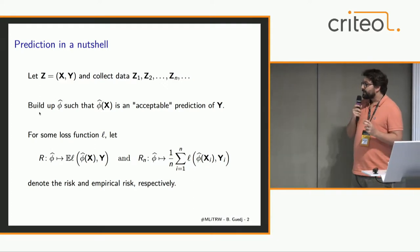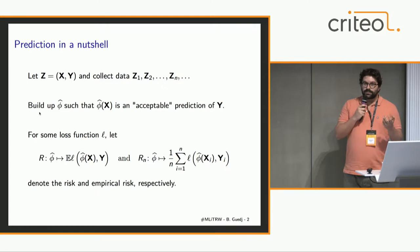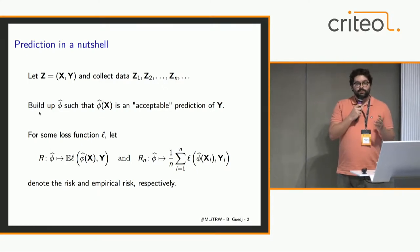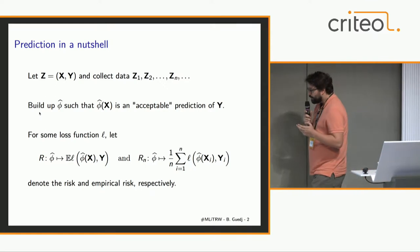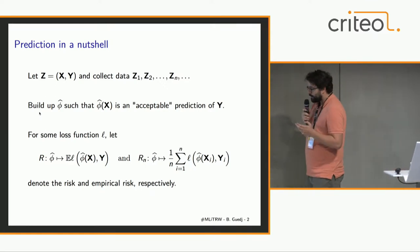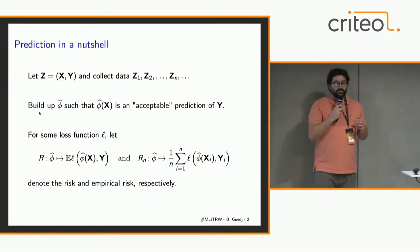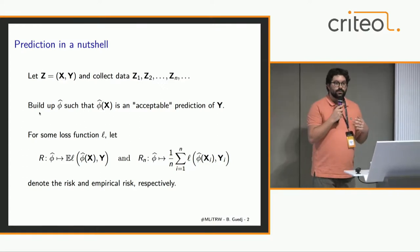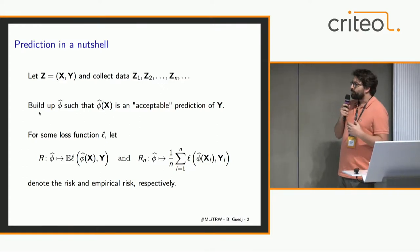So what is 'good' exactly? You would typically define a loss function, and then, as we've seen in many other talks today, you would look at the risk, which is the expectation of this loss with respect to the unknown distribution of data and its empirical counterpart.